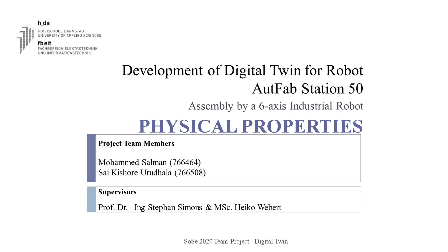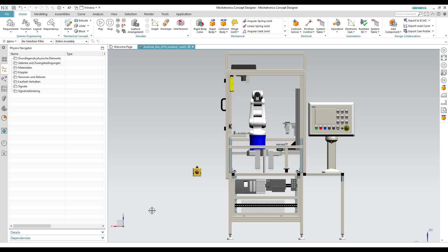In this video, you will learn how to specify the rigid bodies, fixed joints, hinge joints, sliding joints, and position controls for the necessary components of the robot station.